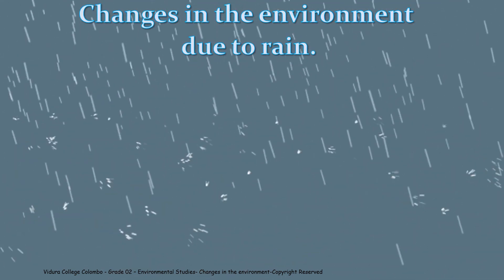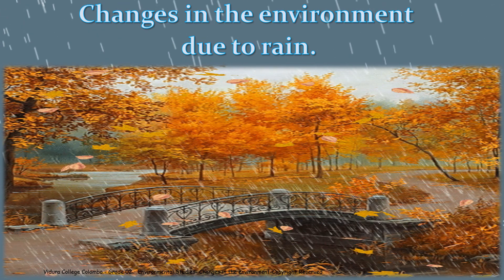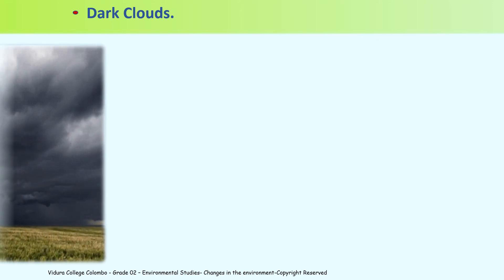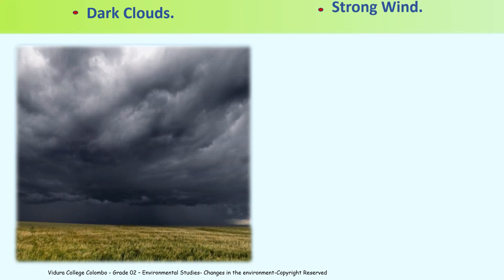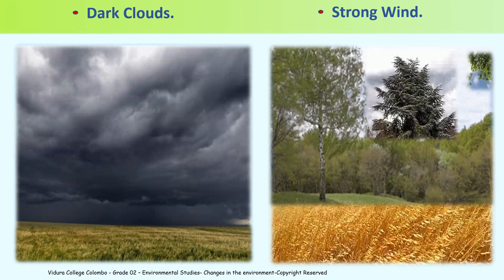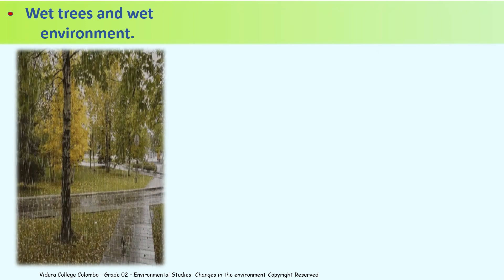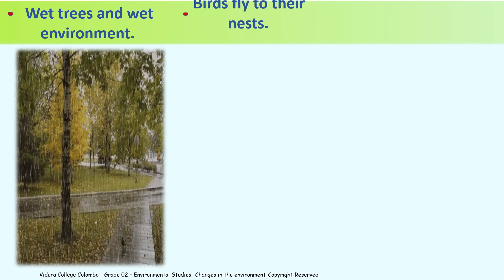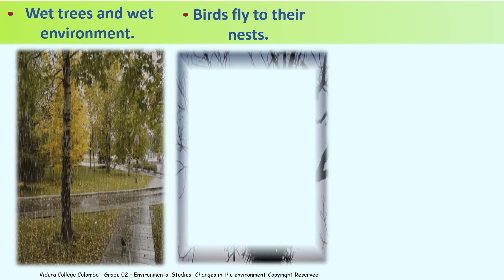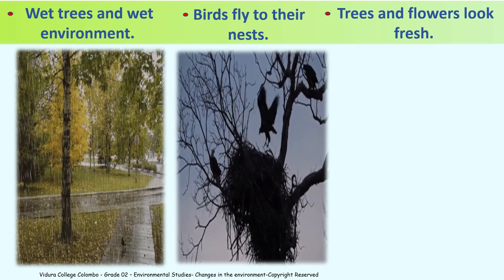Okay, children. Let's learn about changes in the environment due to rain. Dark clouds. Strong wind. Wet trees and wet environment. Birds fly to their nests. Trees and flowers look fresh.